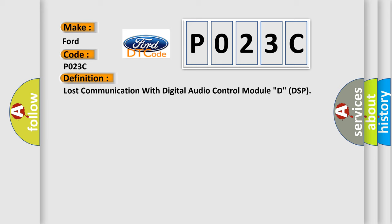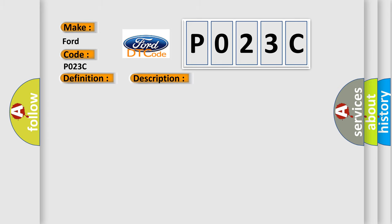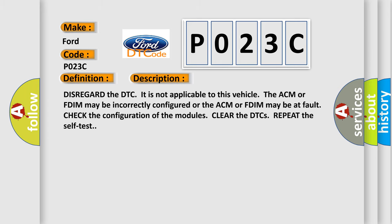And now this is a short description of this DTC code. Disregard the DTC. It is not applicable to this vehicle. The ACM or FDIM may be incorrectly configured or the ACM or FDIM may be at fault. Check the configuration of the modules, clear the DTCs, repeat the self-test.